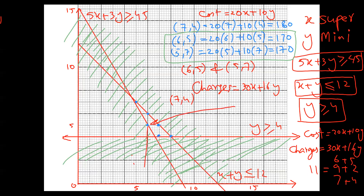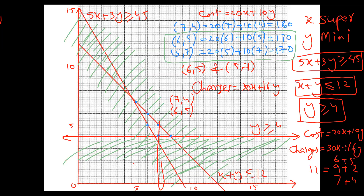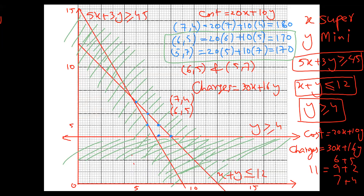Checking other points for X plus Y equals 11: (6, 5) — six plus five equals 11, valid. (7, 5) — seven plus five equals 12, not valid. (6, 6) — twelve, not valid. (5, 7) — twelve, not valid. So we have only two valid options: (7, 4) and (6, 5). These are the two options for the charges part.